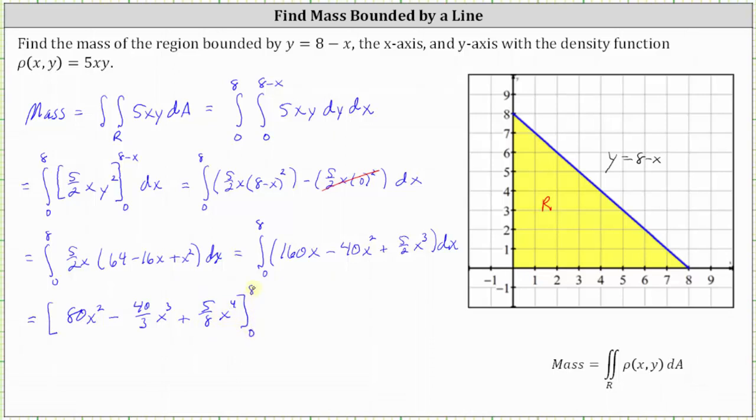And that's the last step. We need to find F(8) minus F(0). Substituting 8 for x, we have 80 times the square of 8 minus (40/3) times the cube of 8, plus (5/8) times the fourth power of 8, minus F(0) is going to be 0. This simplifies exactly to 2560/3. Or if we round to four decimal places, we have approximately 853.3333.